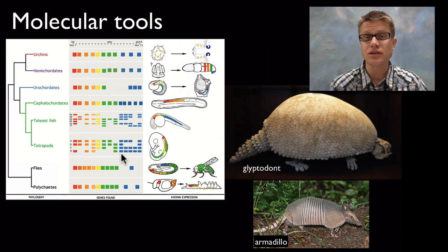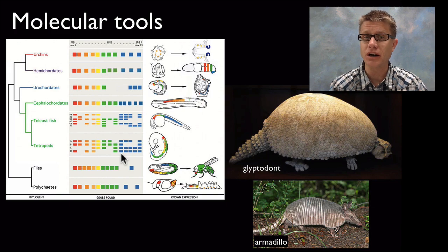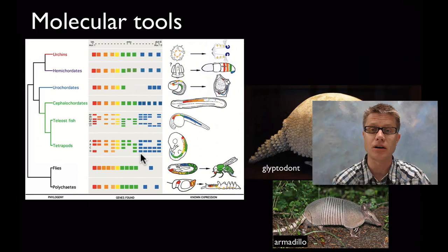We can also look at fossils and compare those to living things. So this is the glyptodon, which was a massive armadillo-like creature that weighed about as much as a car. And we can compare its fossils with living organisms like an armadillo today.